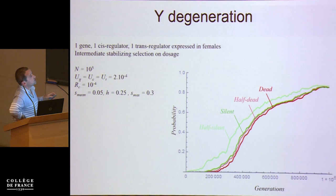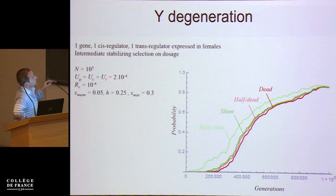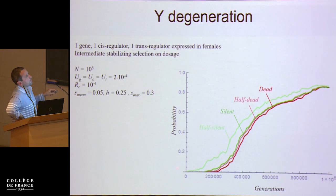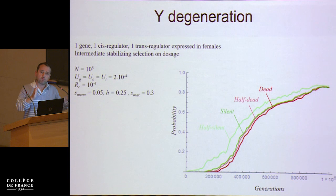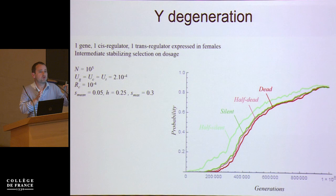Now turning to the results. Here is a simulation averaged over many replicates with a quite large population and different mutation rates and parameters. What you look at here, across one million generations, is the probability for what I call half-silent, silent, half-dead, and dead: half-silent means the gene on the Y is halfway through silencing; silent means it's completely silenced; half-dead means it has accumulated deleterious mutations to the point of reaching S_max over two; and dead is when it has reached S_max.